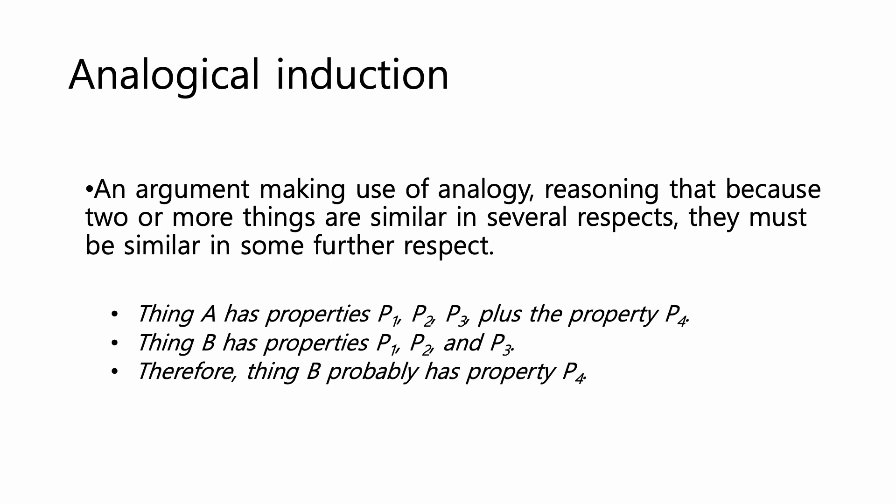The logic of analogical arguments or analogical inductions is as follows. Thing A has properties P1, P2, P3, plus the property P4. Thing B, that you're comparing and contrasting, has properties P1, P2, and P3. Therefore, based on the comparison or analogy between the two, thing B probably has property P4.